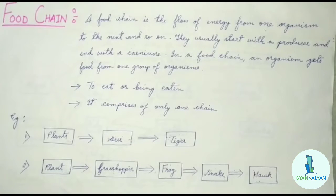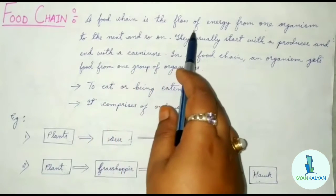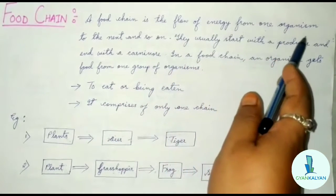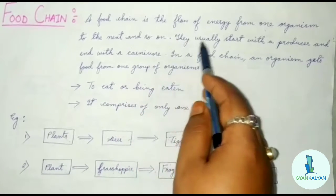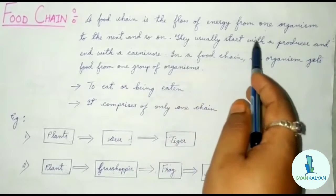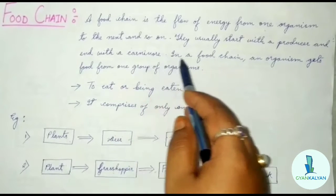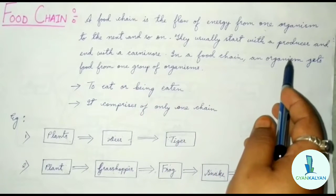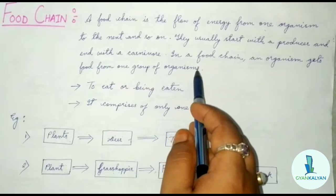So what do you mean by food chain? A food chain is the flow of energy from one organism to the next and so on. They usually start with a producer and end with a carnivore. In a food chain, an organism gets food from one group of organisms.